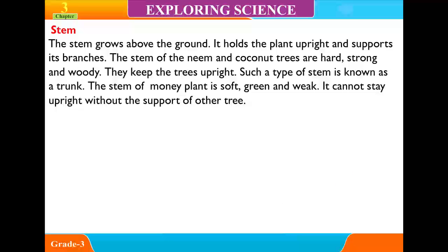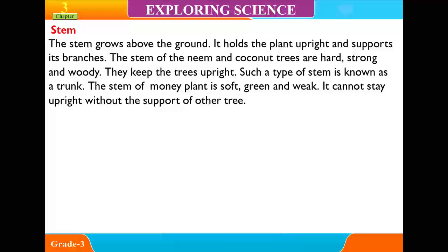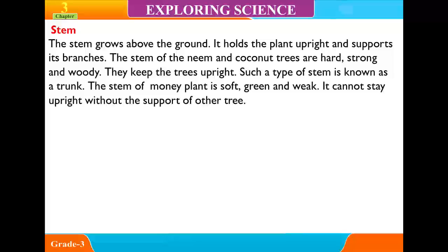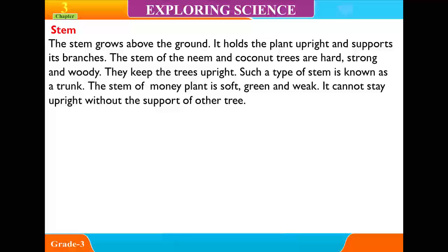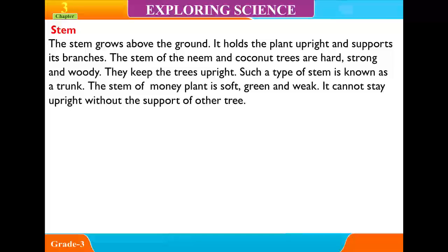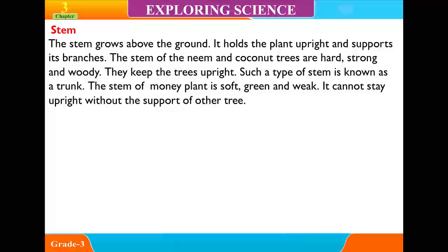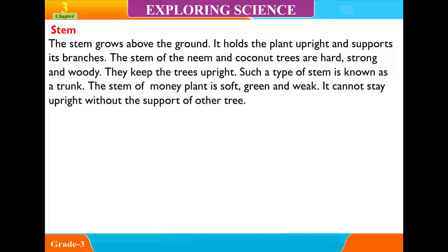The stem grows above the ground. It holds the plant upright and supports its branches. The stem of trees like neem and coconut is hard, strong and woody. They keep the trees upright. Such a type of stem is known as a trunk. The stem of many plants is soft and weak. It cannot stay upright without the support of other trees.